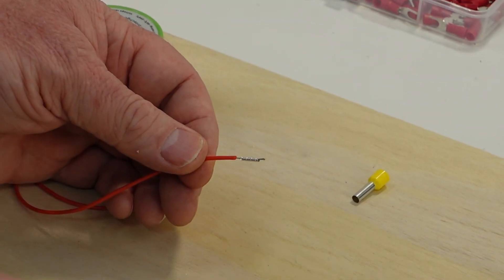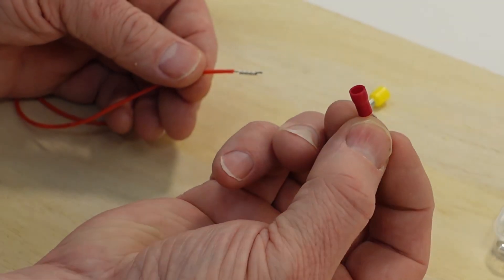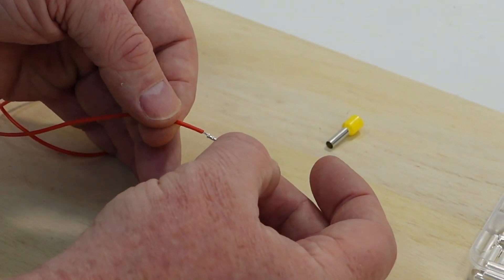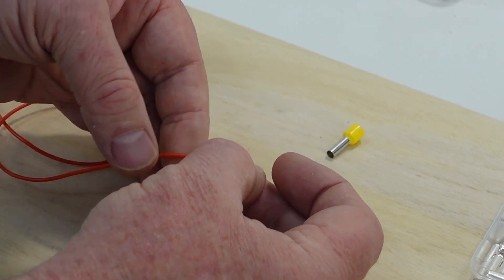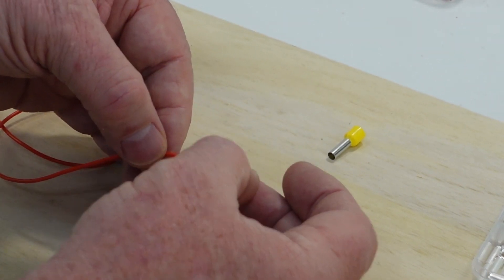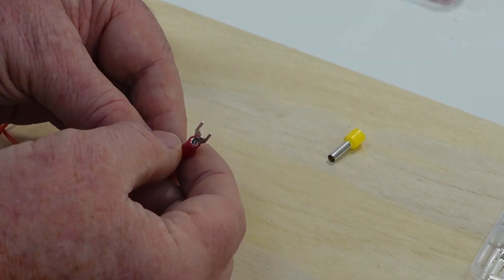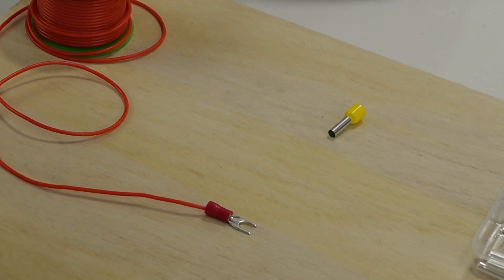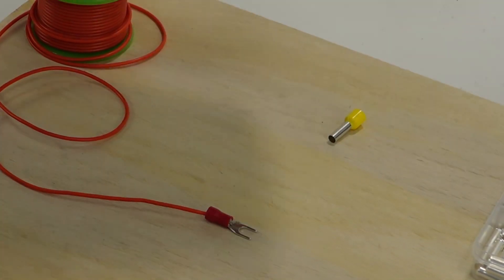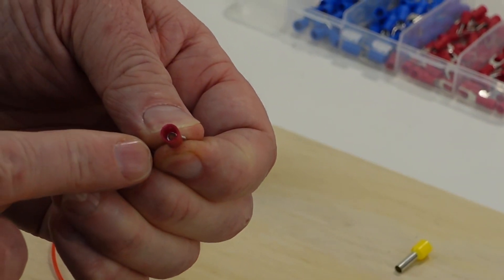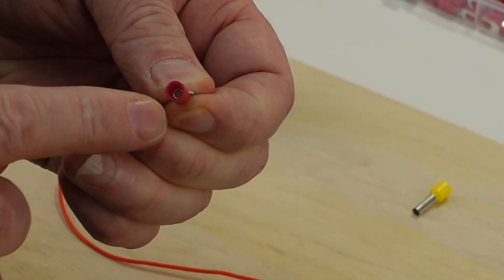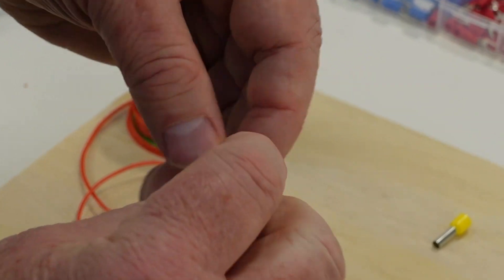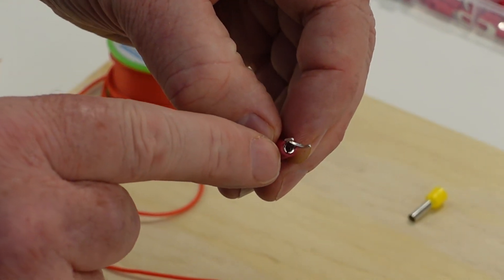Because what we're going to do next is we're going to add our 22-gauge terminal end here onto that. Now you want to make sure that that kind of fits into the cylinder barrel there. I call it the barrel. Let's take a closer look at this connector. So I don't know if you can get a good shot looking down there. But that's a cylinder as well. So the ferrule is kind of sticking right into that. And it can actually come out the other end, really, if we wanted it to.